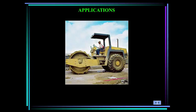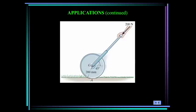Here you see a soil compactor. As it accelerates forward, the front roller experiences general plane motion — it both translates and rotates. How would you find the loads experienced by the roller shaft or at its bearings? Here we see a lawn roller being pushed forward with a force of 200 newtons when the handle is at 45 degrees. How can we determine its translational acceleration and angular acceleration? Does the total acceleration depend upon the coefficients of static and kinetic friction?